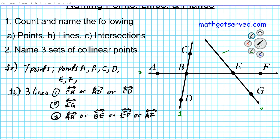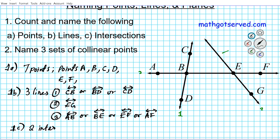Intersections are basically the points where two lines cut each other. Looking at the diagram, line CD and line AF cut each other — that's one intersection. And line EG and line AF intersect at another point. For number one C, there are two intersections, located at points B and E.